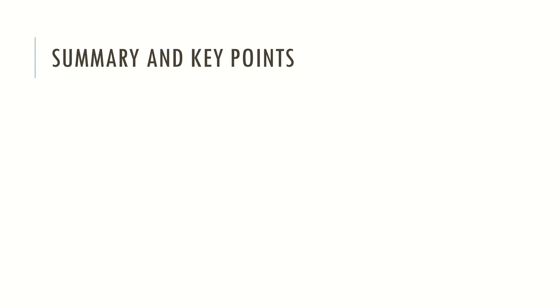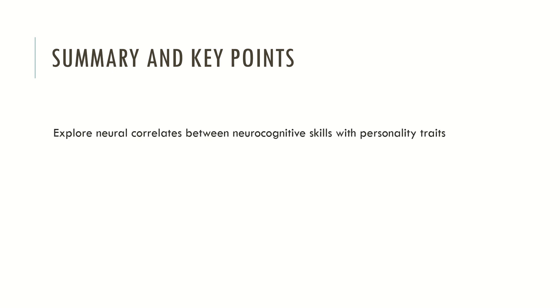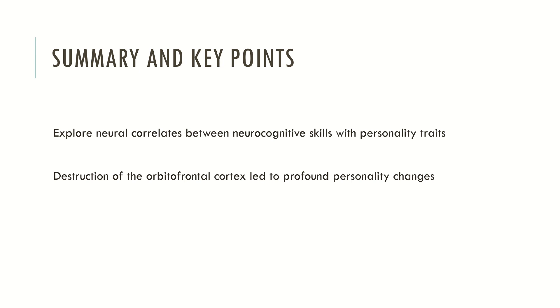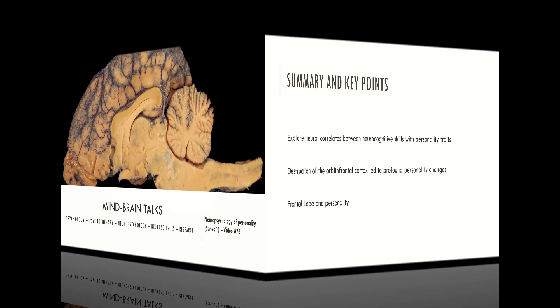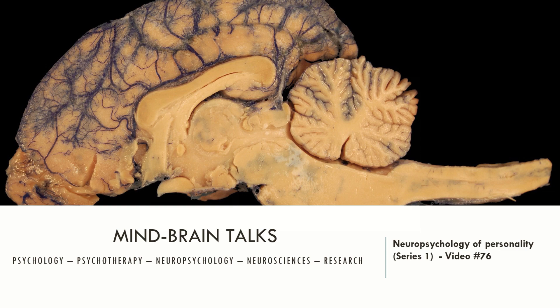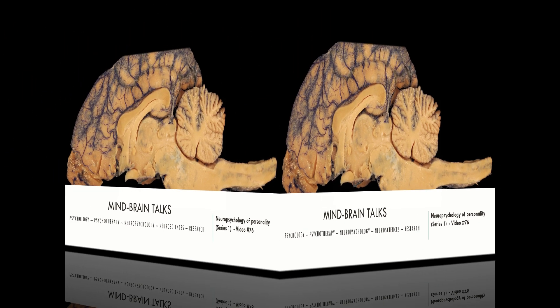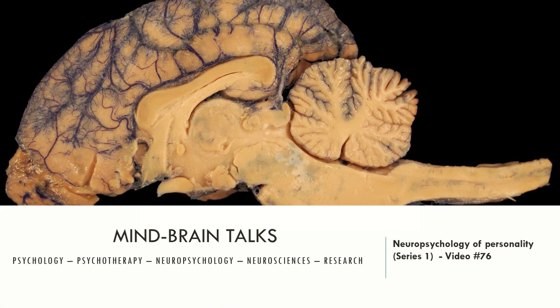Now let's see the summary and key points. Neuropsychology of personality explores neural correlates between neurocognitive skills and personality traits. We saw that the destruction of the orbitofrontal cortex led to profound personality change, which implies a relationship between the frontal lobe and personality. This is just an introductory video on the neuropsychology of personality, but in the future I will detail more of these issues in further videos. So stay tuned!